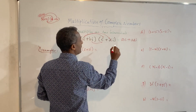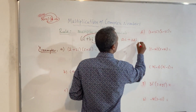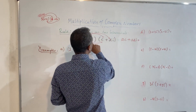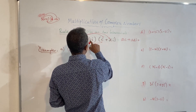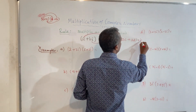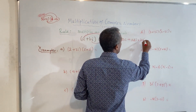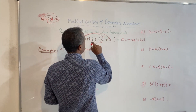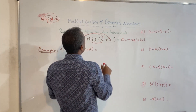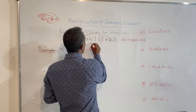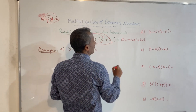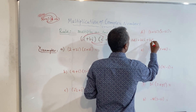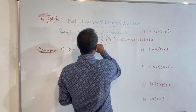Then bi times c gives bci. Plus, bi times di: b times d times i times i, which is bdi squared.